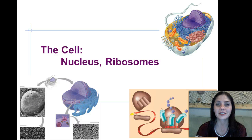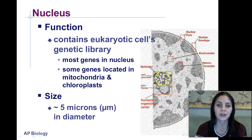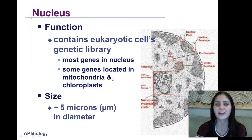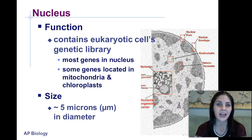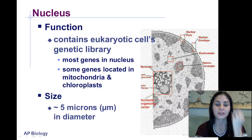We're going to begin with discussing the nucleus, and then we're going to move on to ribosomes. The function of the nucleus is to contain all of the cell's genetic material in eukaryotic cells — it's basically the library of the cell. Most genes are in the nucleus, though some genes are actually located in mitochondria and in the chloroplasts. If you remember from last year, we talked about the endosymbiont theory — that mitochondria and chloroplasts used to be their own entities and were eventually engulfed into eukaryotic cells, which is why they both have their own genetic material. The size of the nucleus is approximately 5 microns or 5 micrometers in diameter.